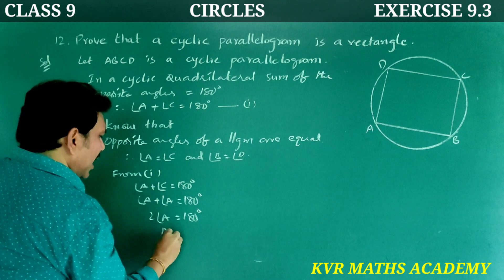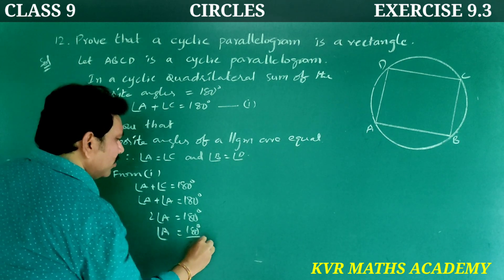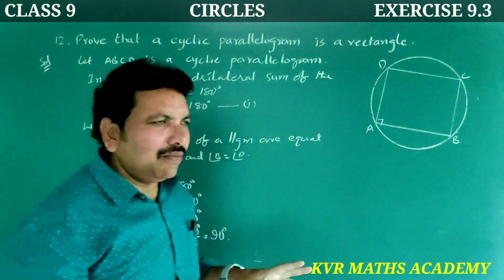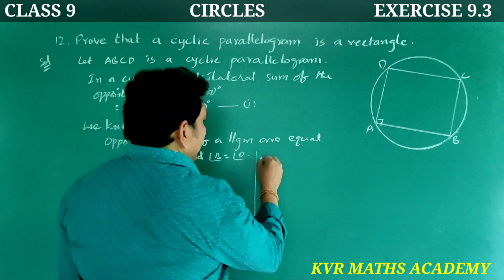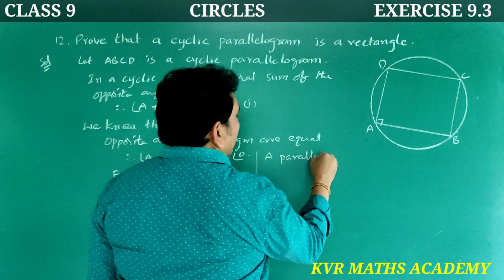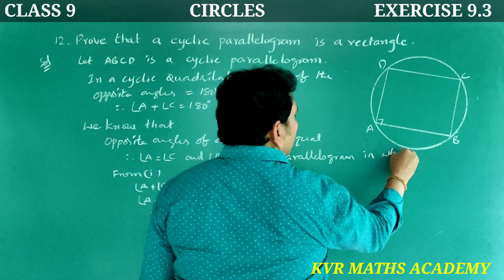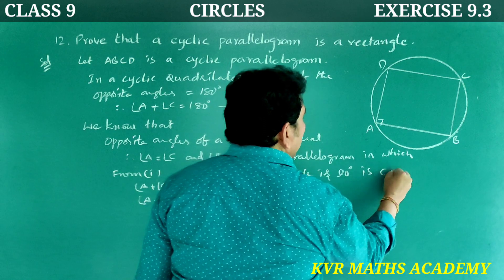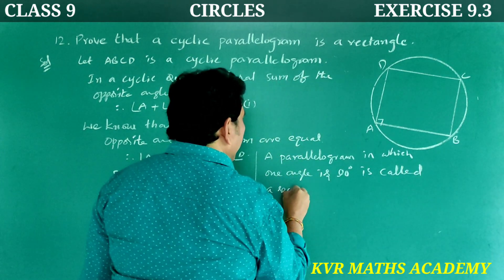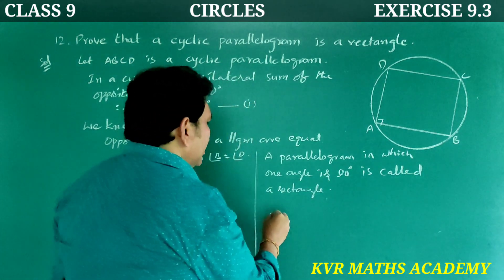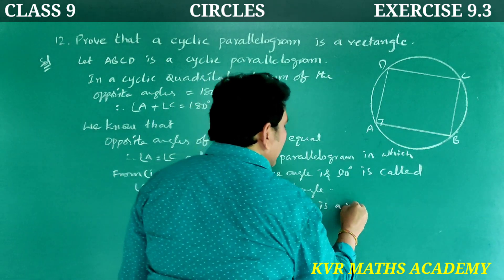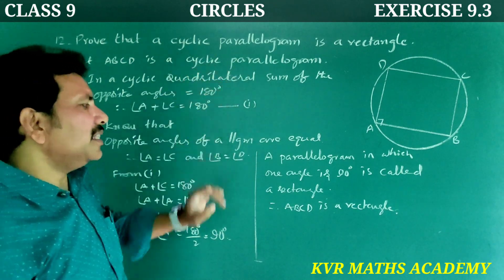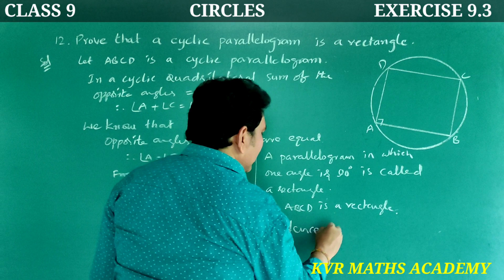From equation one, angle A plus angle C equals 180 degrees. Substituting angle A in place of angle C: angle A plus angle A equals 180 degrees, so 2 angle A equals 180 degrees, therefore angle A equals 90 degrees. A parallelogram in which one angle is 90 degrees is called a rectangle. Therefore ABCD is a rectangle. Hence proved.